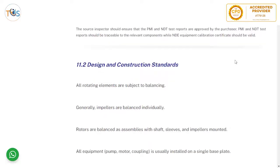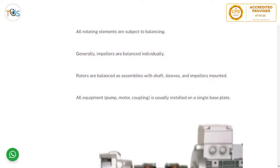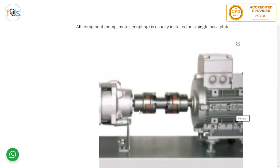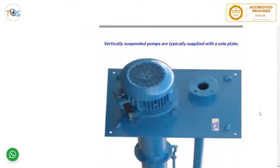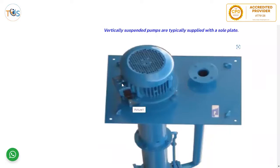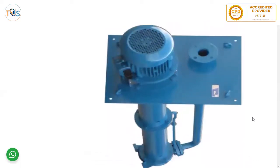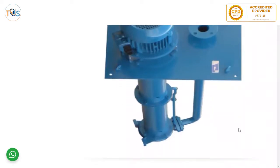Design and construction standards — all rotating equipment is subject to balancing. Generally, impellers are balanced individually while rotors are balanced as assemblies with shafts, sleeves, and impellers mounted. All equipment — pump, motor, coupling — is usually installed on a single base plate. Vertically suspended pumps are typically supplied with a sole plate, while vertically mounted or overhang pumps are normally small centrifugal pumps used for utilities.